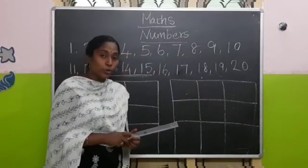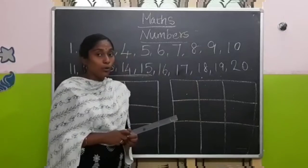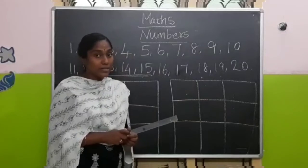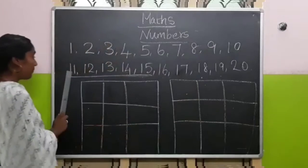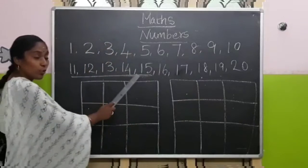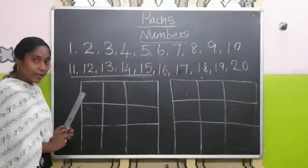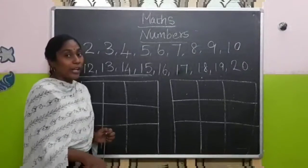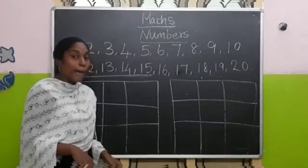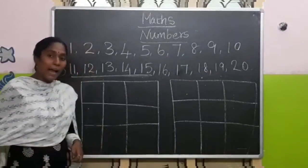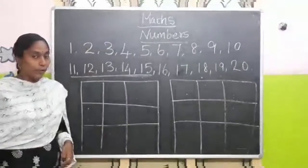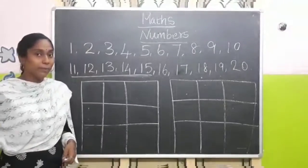Kooties, I am going to teach how to write numbers from 11 to 50. Shall we start writing? Take your note, pencil and eraser. Write with me.